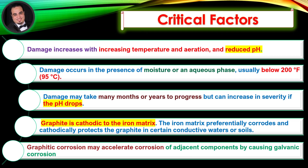Critical factors: Damage increases with increasing temperature and aeration, and reduced pH. Damage occurs in the presence of moisture or an aqueous phase, usually below 200 degrees Fahrenheit. Damage may take many months or years to progress, but can increase in severity if the pH drops.